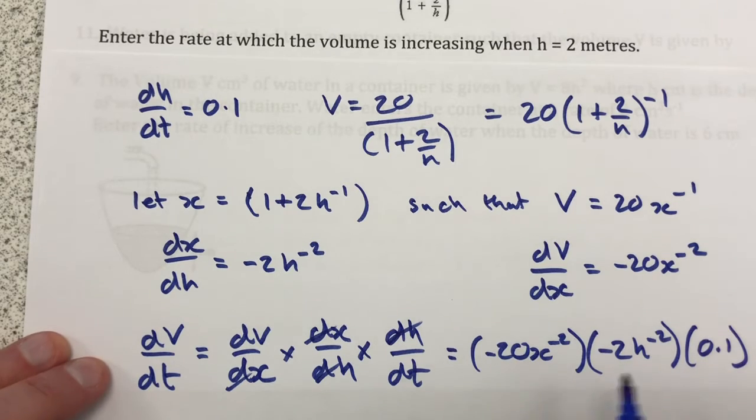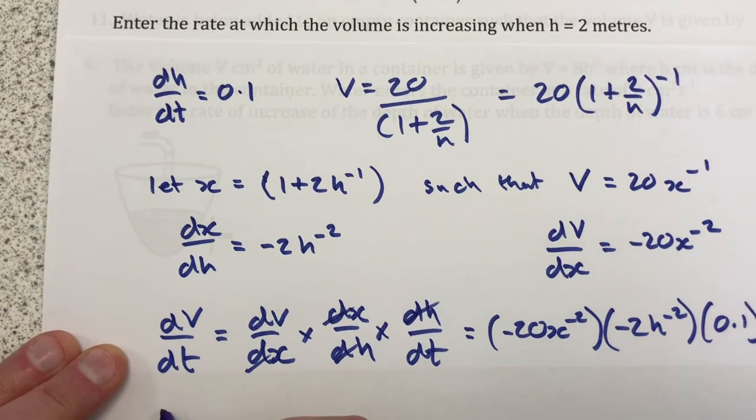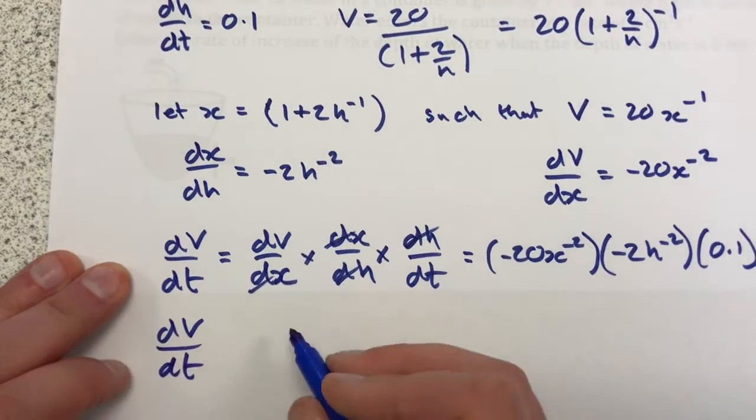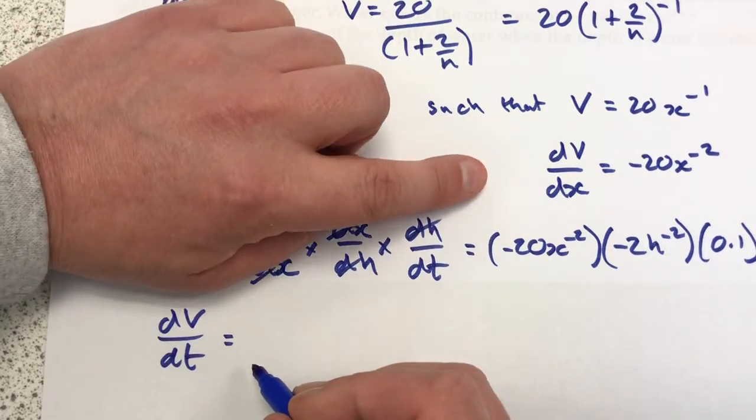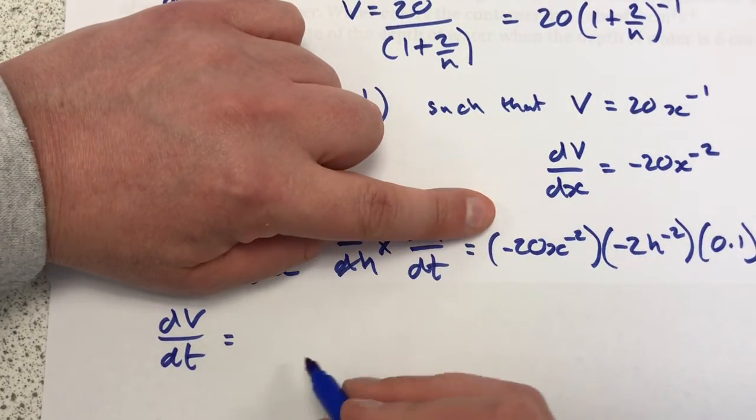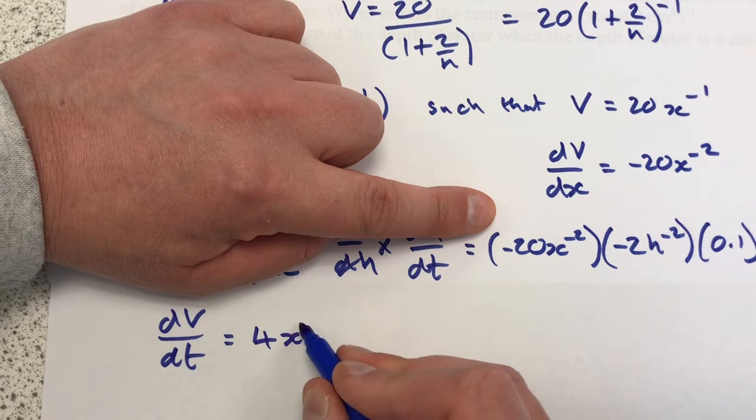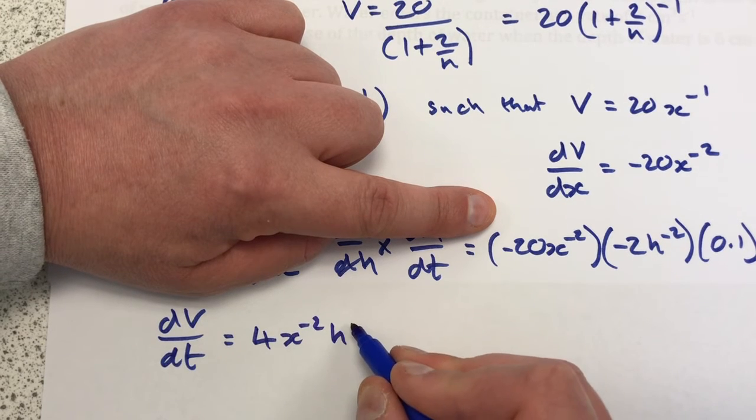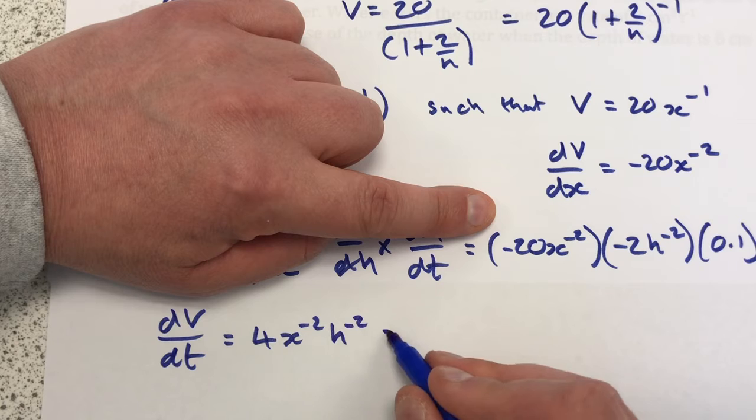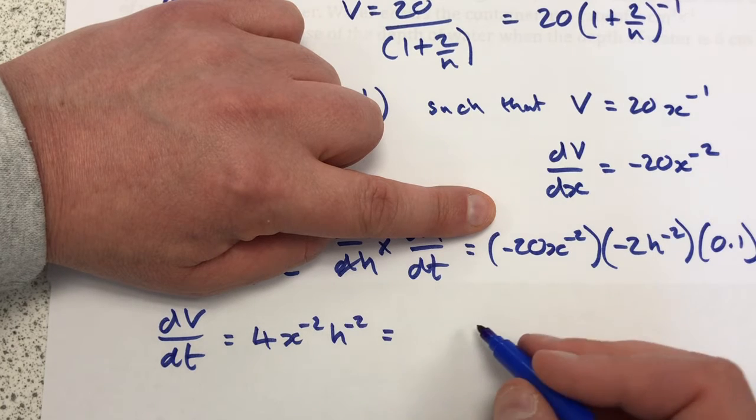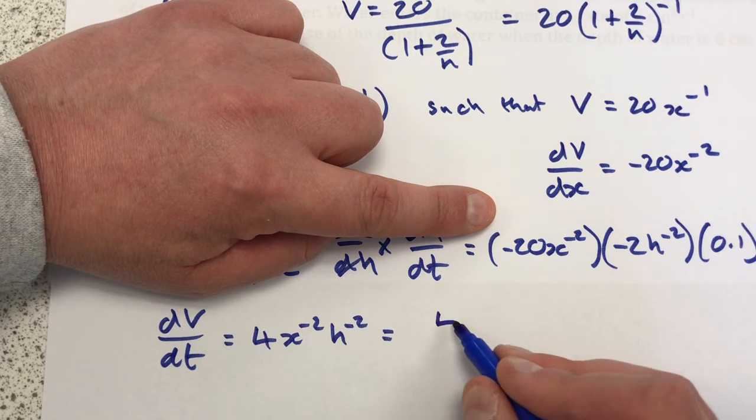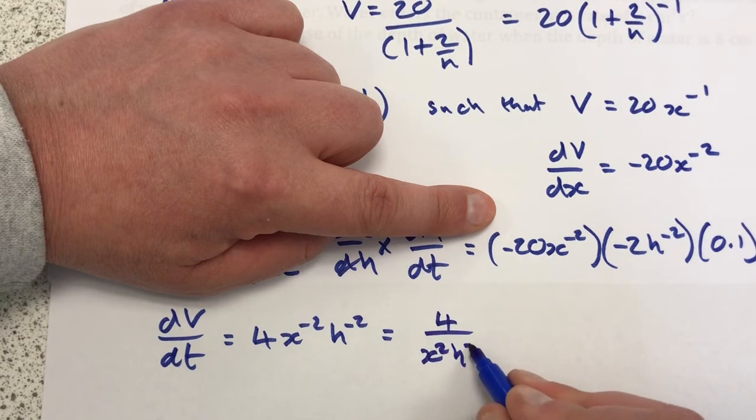Right, so we've got something here that's quite untidy. So dV/dt is going to be equal to, tidying this up, we'll end up with 4x to the minus 2h to the minus 2, and we can write this in several ways but let's go with 4 over x squared h squared.